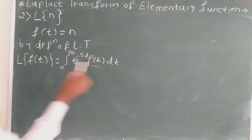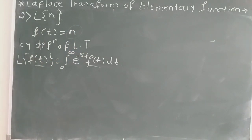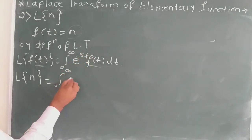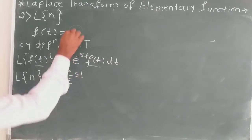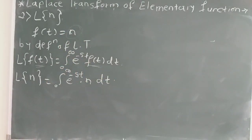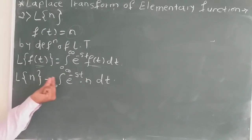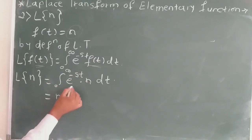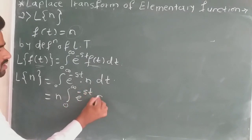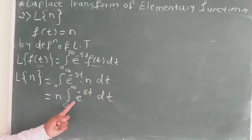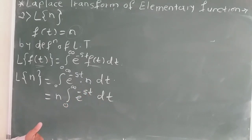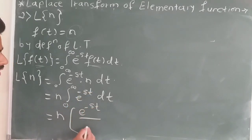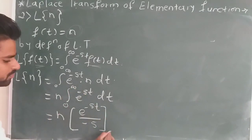We replace f(t) by n. So we get: Laplace transform of n is equal to integration over 0 to infinity of e raised to minus st into n dt. Since n is a constant, we bring it before the integration sign: n into integration over 0 to infinity of e raised to minus st dt. The integration of e raised to minus st is e raised to minus st upon minus s, with limit 0 to infinity.